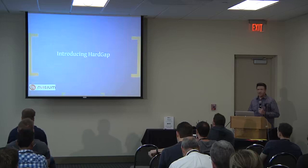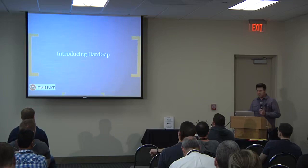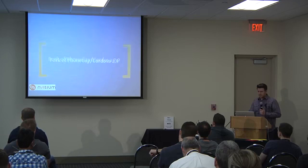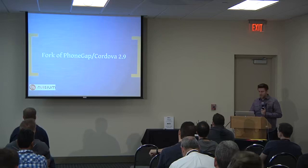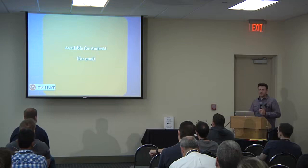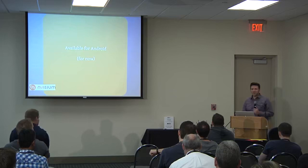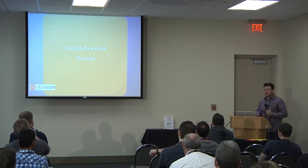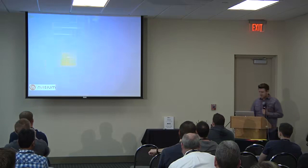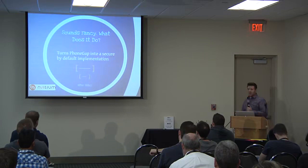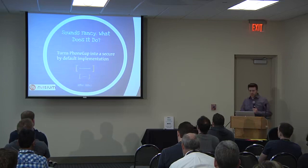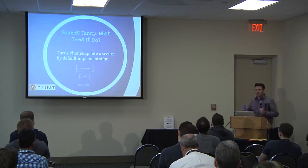The speaker has been working on a secure fork of PhoneGap called HardGap, forked from version 2.9 and currently available for Android. The goal is to eliminate the out-of-the-box gotchas — insecure defaults should simply be off and you turn them on as needed. It works as a template: pull it in, add your code, and everything insecure is already disabled. It doesn't solve all security issues, but removes the low-hanging fruit.